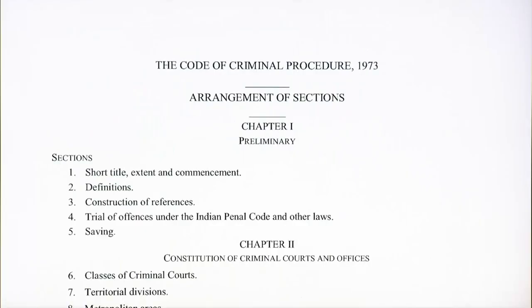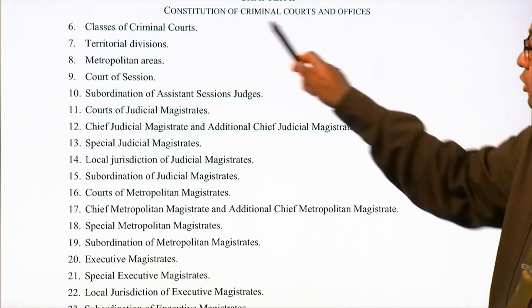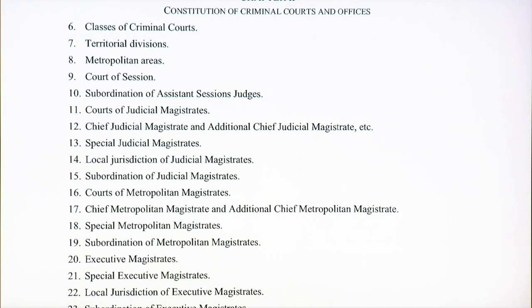Looking at the CrPC of 1973, the preliminary sections are Short Title, Extent and Commencement, and Section 2 Definitions. Then Construction of References, Trial of Offences under the IPC and Other Laws, and Saving of Provisions. Chapter 2 deals with Constitution of Criminal Courts and Offices — how criminal courts are made, covering classes of criminal courts, territorial divisions, metropolitan areas, Court of Session, Subordination of Assistant Sessions Judges, Courts of Judicial Magistrate, CGM and Additional CGM, Special Judicial Magistrate, and Local Jurisdiction of Judicial Magistrates.